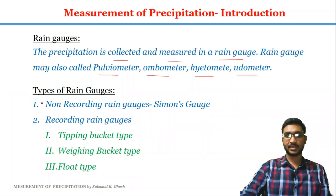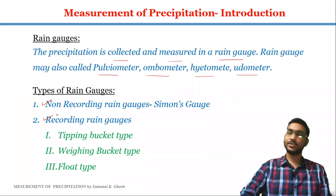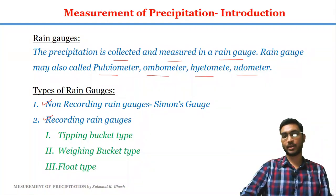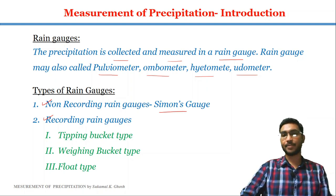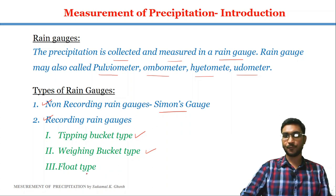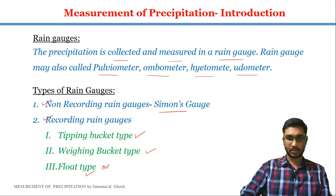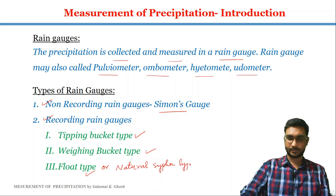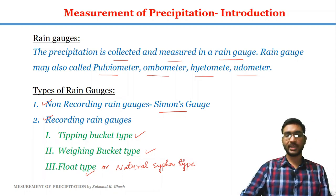There are basically two types of rain gauges. The first one is non-recording type rain gauge and the second one is recording type rain gauges. In India, the most extensively used non-recording type rain gauge is Simon's rain gauge. Some commonly used recording type rain gauges are tipping bucket type, weighing bucket type, and float type rain gauge. The float type recording rain gauge may also be called as natural siphon type recording gauge.